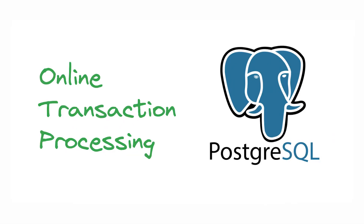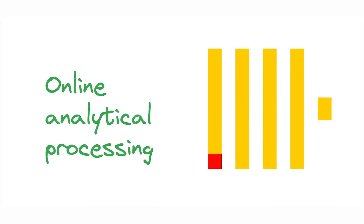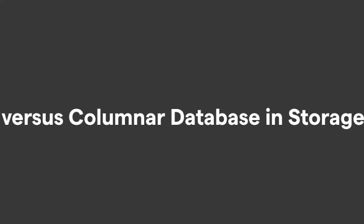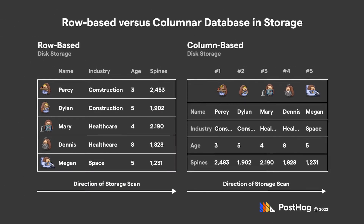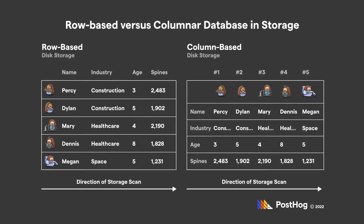To start, let's compare the database types. OLTP — which Postgres is — is a row-based database. It stores data and objects as rows, like a phone book. ClickHouse is OLAP, which is a column-based database. It ingests data as columns, meaning there can be a large number of them. The big difference is how each stores data. You can continue to use SQL to interface with either, but query performance differs significantly.